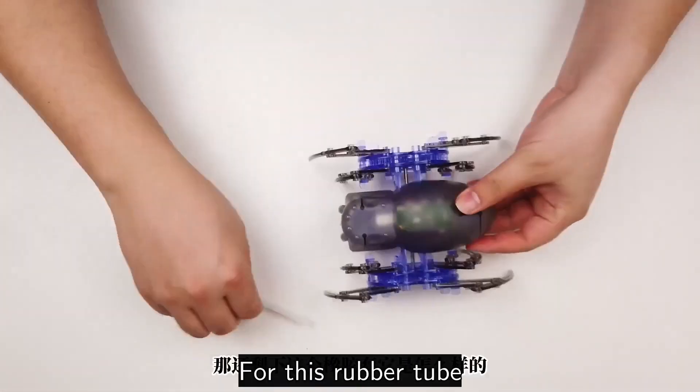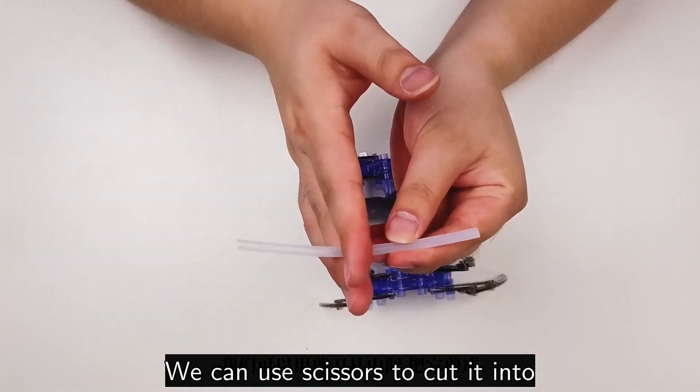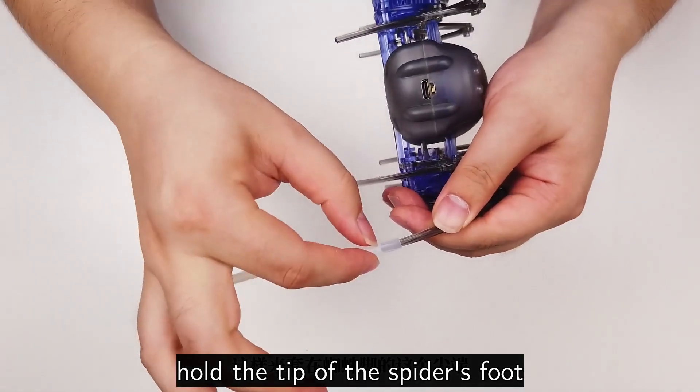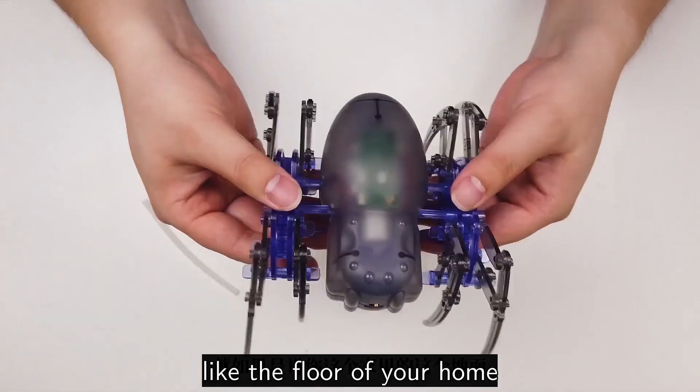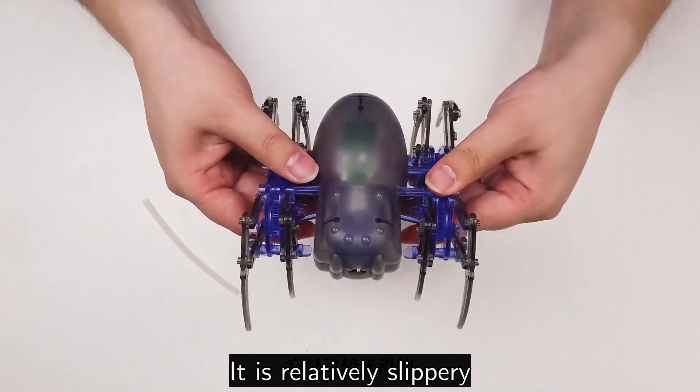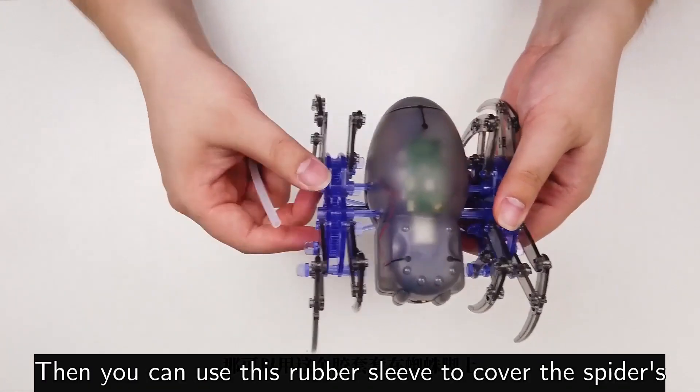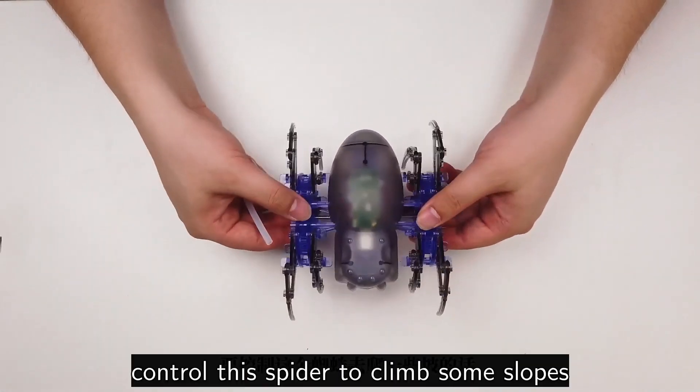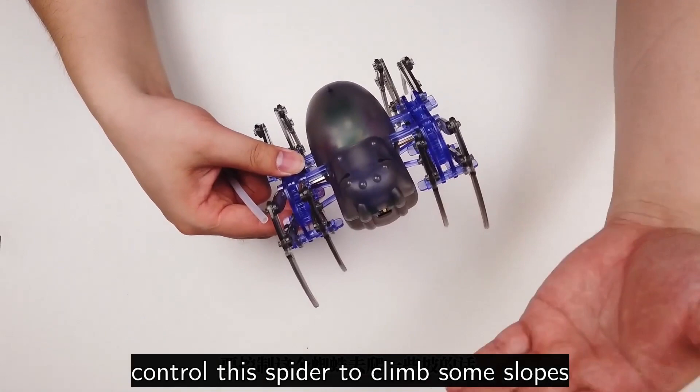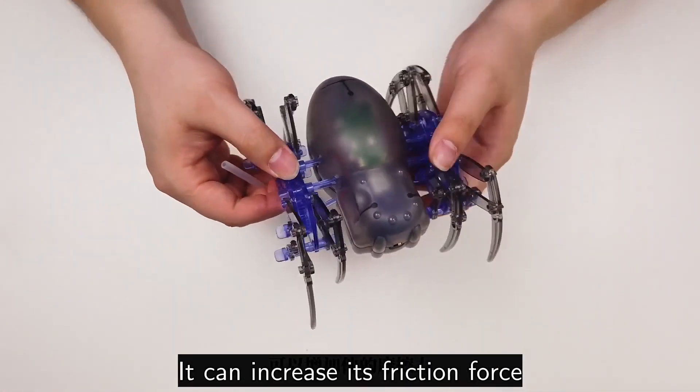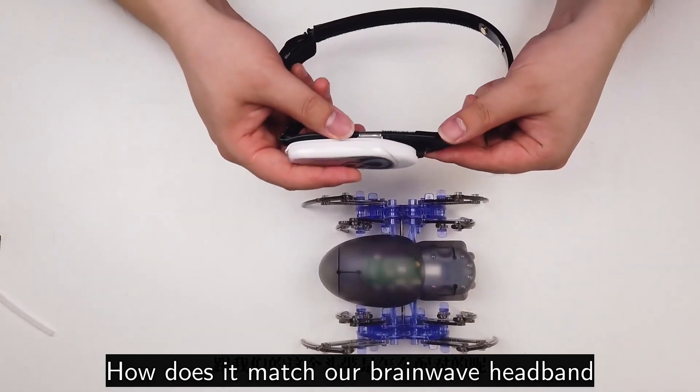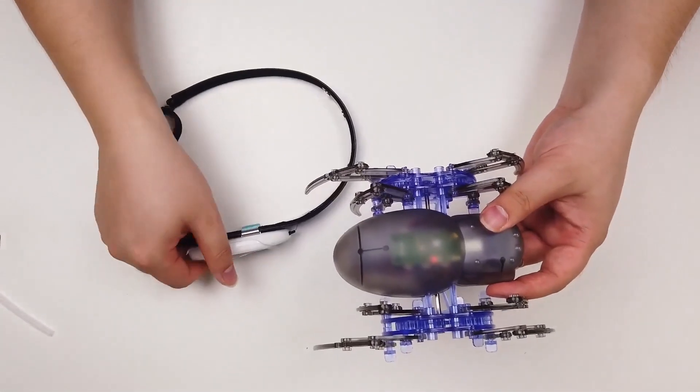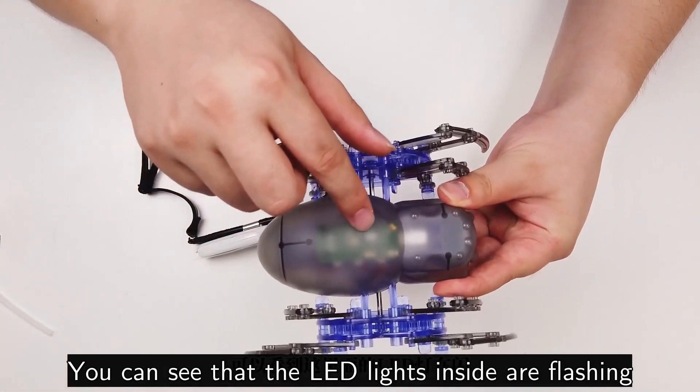Buckle it on top. For this rubber tube, we can use scissors to cut it into eight parts, and then use rubber sleeve to hold the tip of the spider's foot. This one is anti-slip. Like the floor of your home, if it is relatively slippery, then you can use this rubber sleeve to cover the spider's feet so it doesn't slip easily when it runs. Or perhaps you control the spider to climb some slopes. This rubber foot protector can increase its friction force.